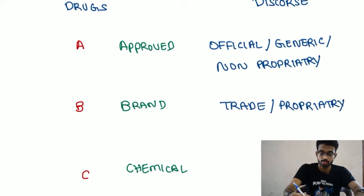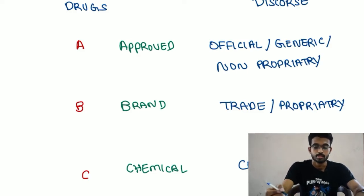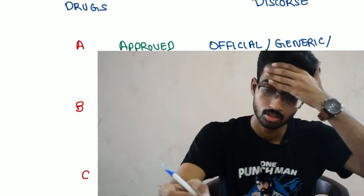C is called as chemical name. It is also called as code name. Next, one is essential drugs — how do you know the name of drug? It is called as characteristics.